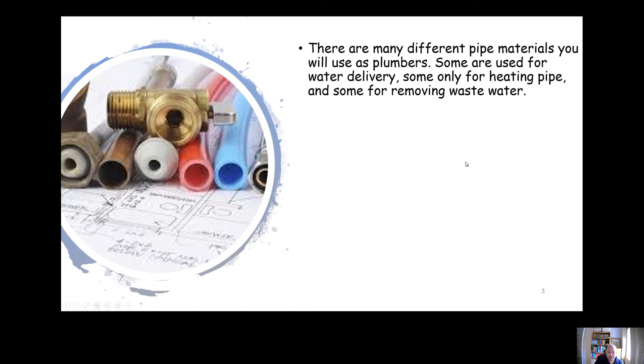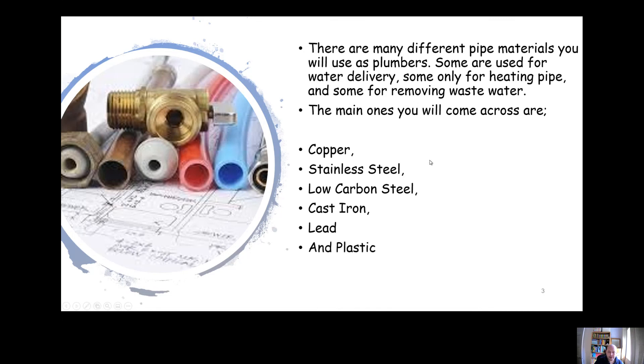We use lots of different types of pipe materials as plumbers. Some are used for water delivery, some are used for heating pipework, some for gas, and some for removing waste water. Some of the ones that we're going to come across are copper, which we use probably more often than most things apart from perhaps plastic, stainless steel very occasionally, low carbon steel, cast iron, lead, and plastic. There's a couple of different categories of plastic: plastic pipe for water supply and plastic pipe for water drainage.